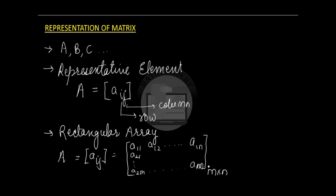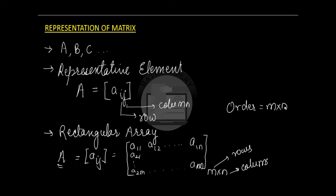What is M here? M is the number of rows and N is the number of columns. So the order of matrix A here is M cross N. The order of the matrix is M cross N, and these are the different ways in which a matrix can be represented.